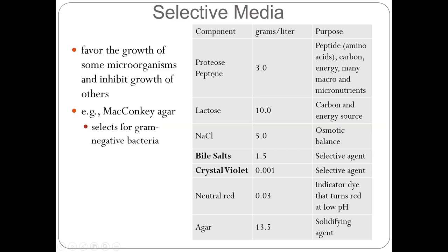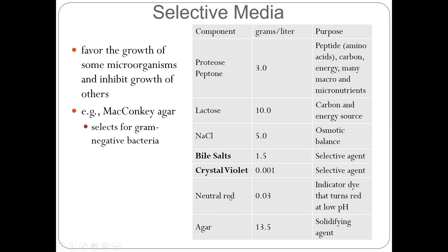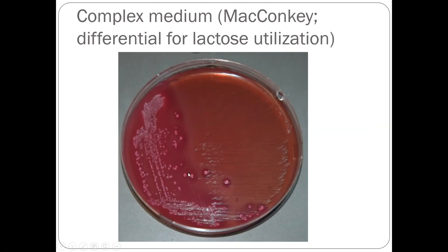When you see peptone in MacConkey agar, it is a complex agar. And when you see lactose and neutral red there, you should know that depending on whether bacteria use lactose for fermentation, this is also a differentiated media. There is lactose and a pH indicator called neutral red. If bacteria use lactose — like E. coli undergoing lactose fermentation — the colony will show pink color. If bacteria like Pseudomonas do not undergo lactose fermentation, the colony should be colorless. Because of the lactose, MacConkey agar is also differentiated media.